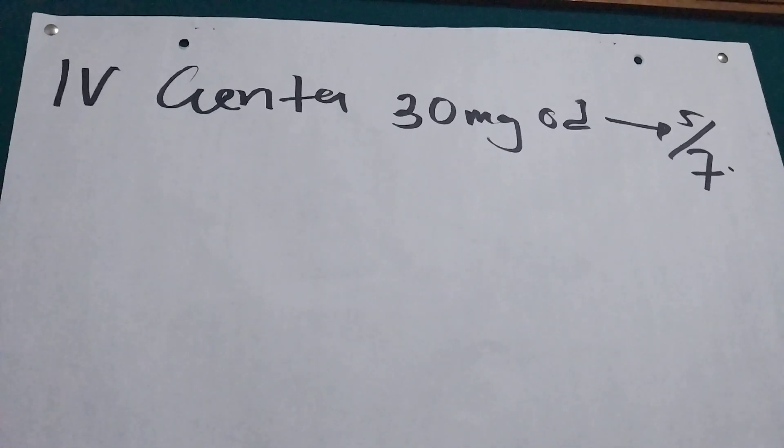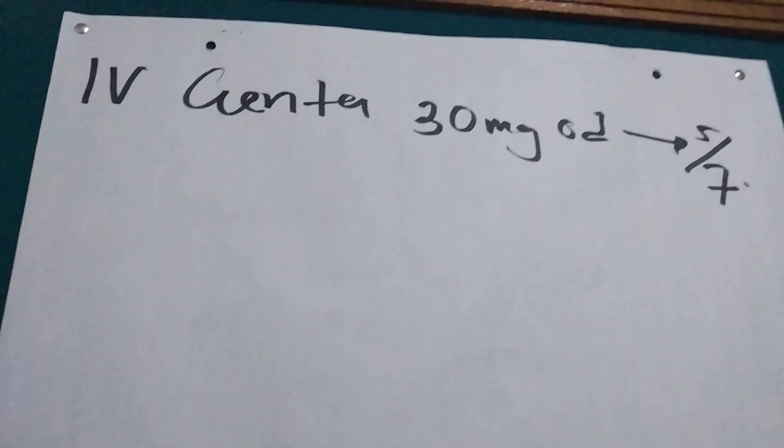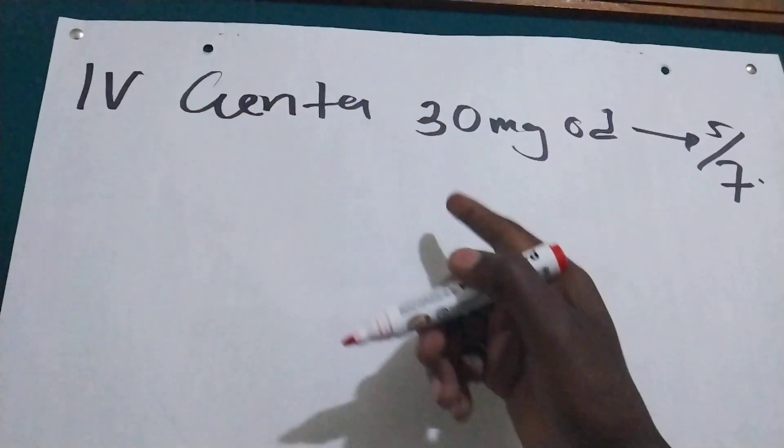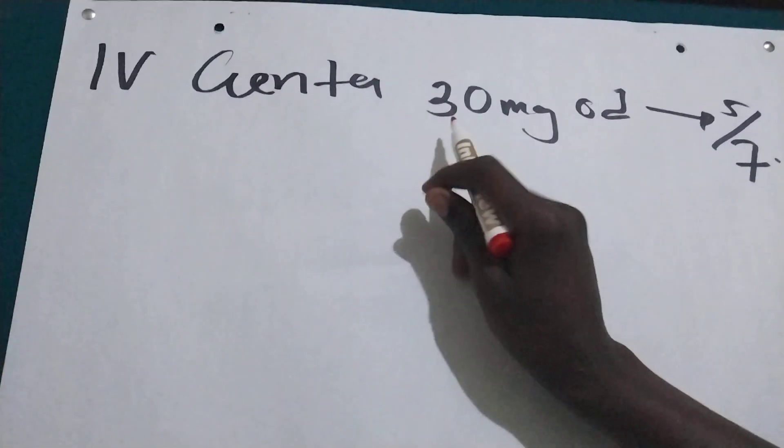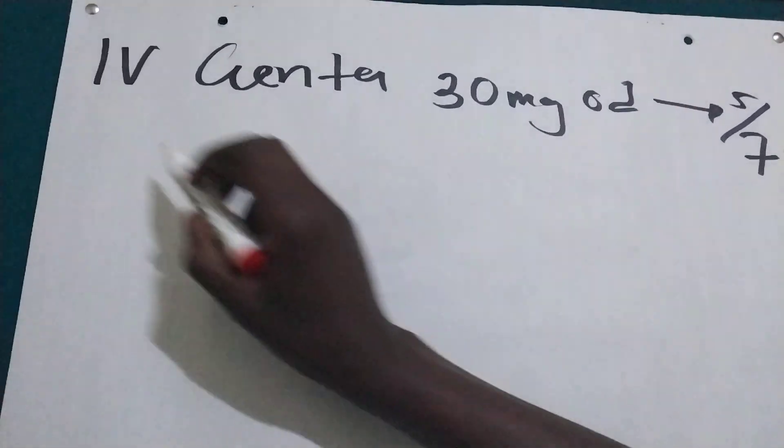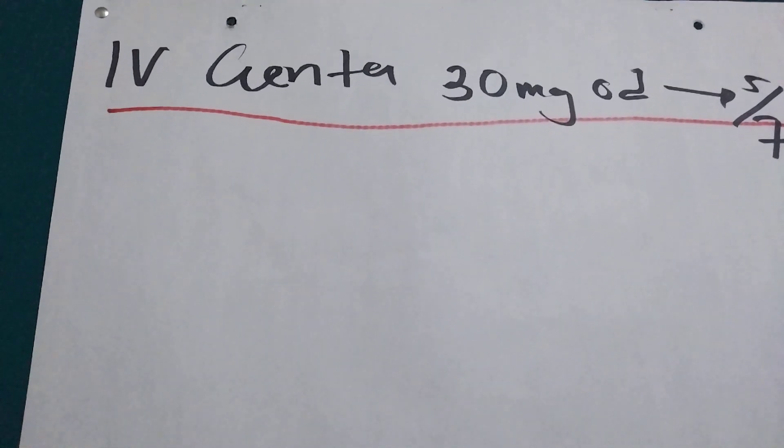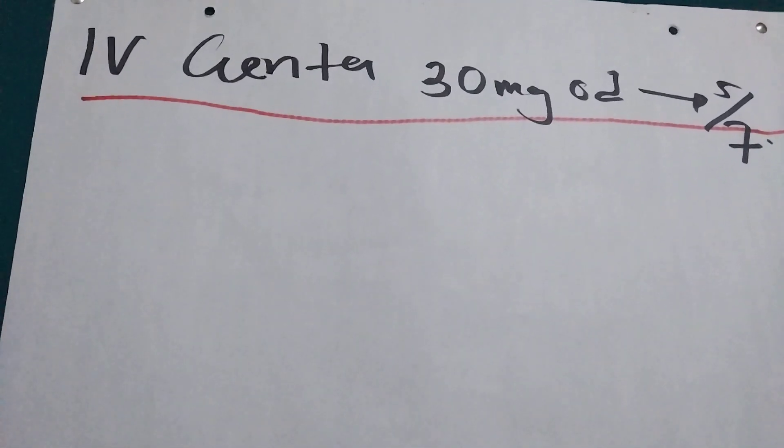Welcome back guys, today I'm going to show you how we can give this prescription: IV gentamicin 30mg OD for 5 days. So this is our prescription, IV gentamicin 30mg OD for 5 days, only once a day.